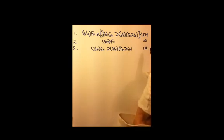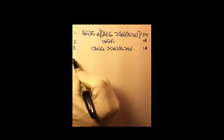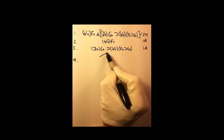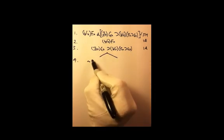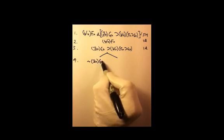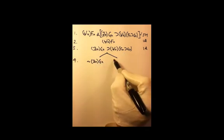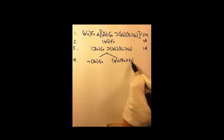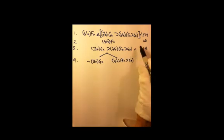Now we have no choice but to branch, because the main logical operator in the sentence on line 3 is the horseshoe. We branch: on the left, the negation of the antecedent — it's not the case that there is an x, g(x). On the right, we have 'for all x, if f(x) then g(x).' That comes from line 3 by conditional decomposition.